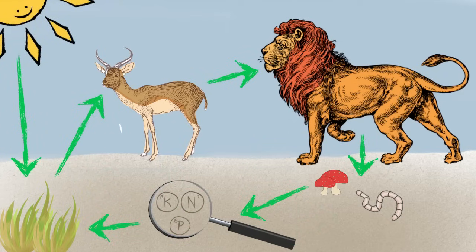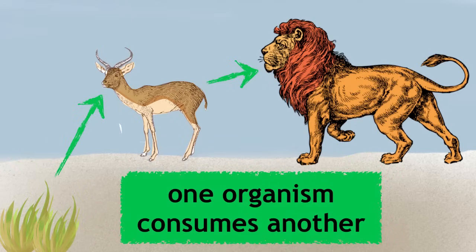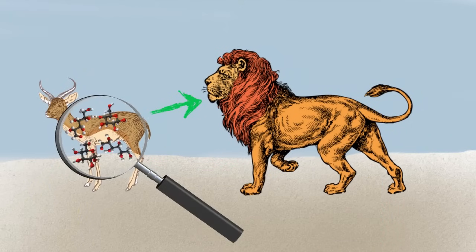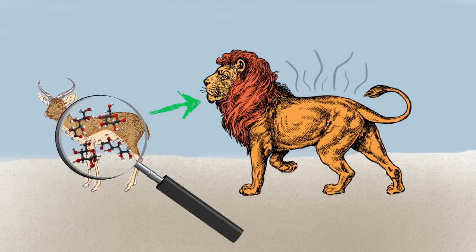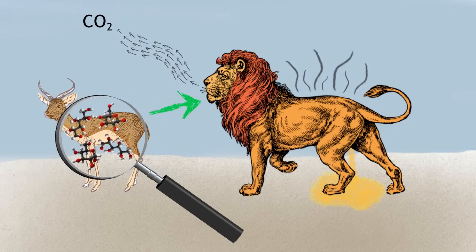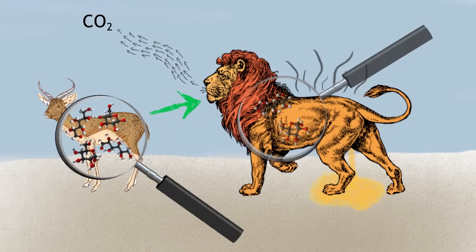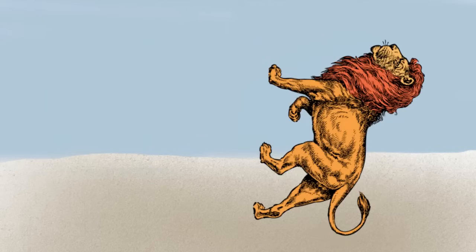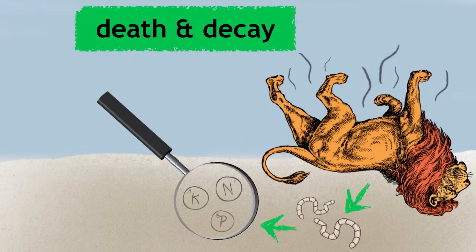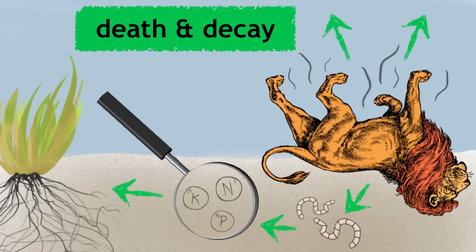One of the most typical transfers is when one organism consumes another. The molecules and energy that made up the consumed organism are either lost as heat or expelled, such as carbon dioxide or excreted nitrogenous waste, and the remaining molecules are integrated into the consuming organism's biomass. Cycles are often completed by death and decay, which is vital for all organisms as they return many vital nutrients to the producers and the atmosphere.